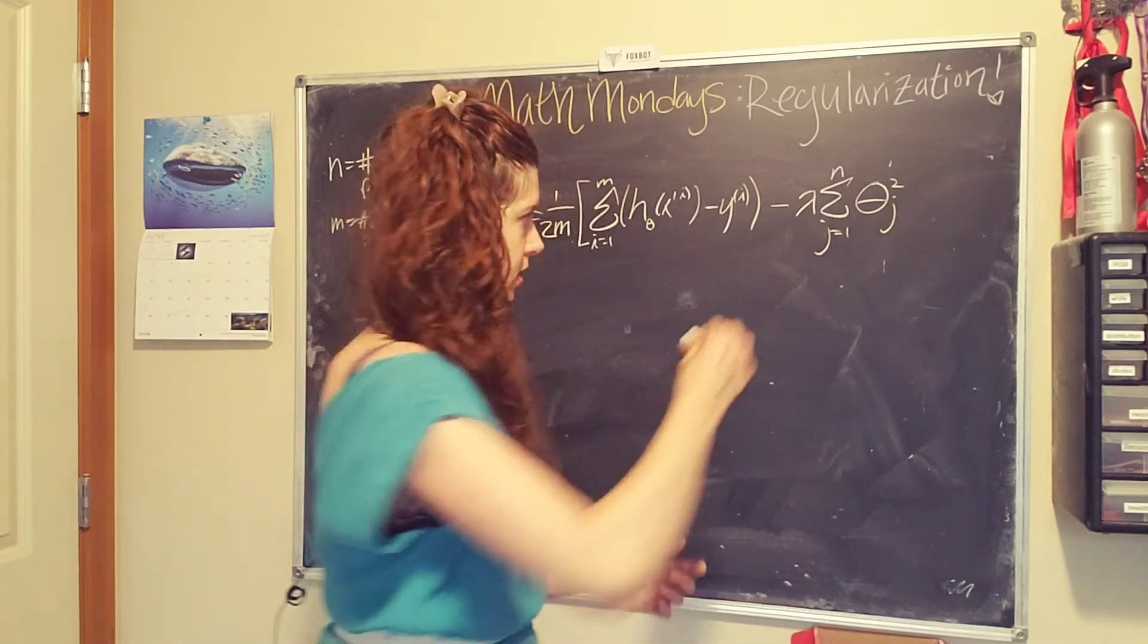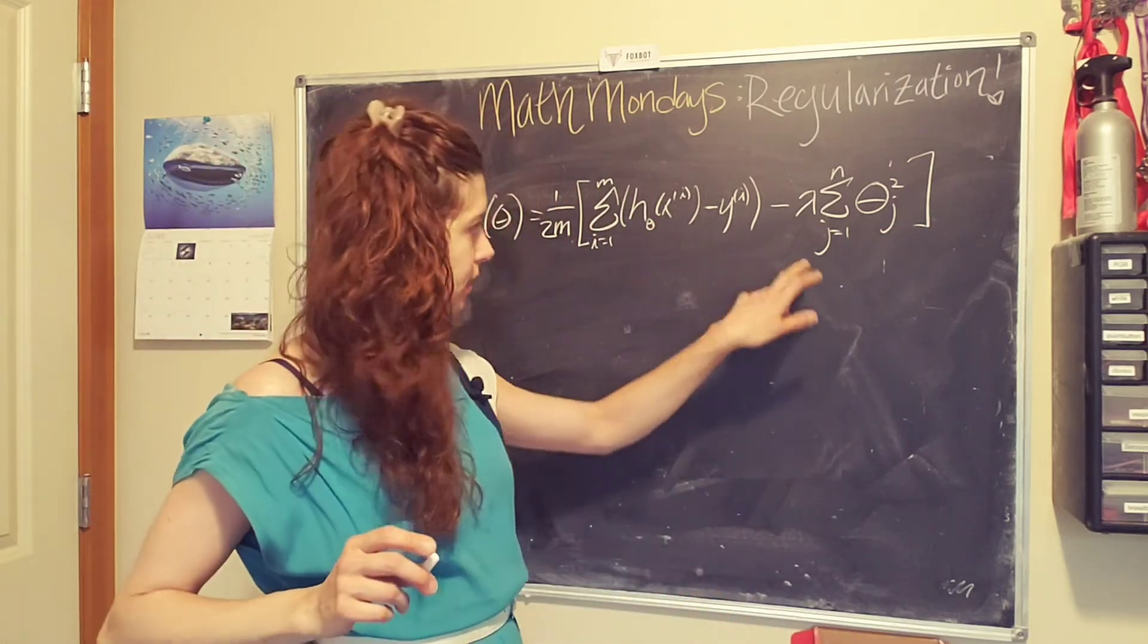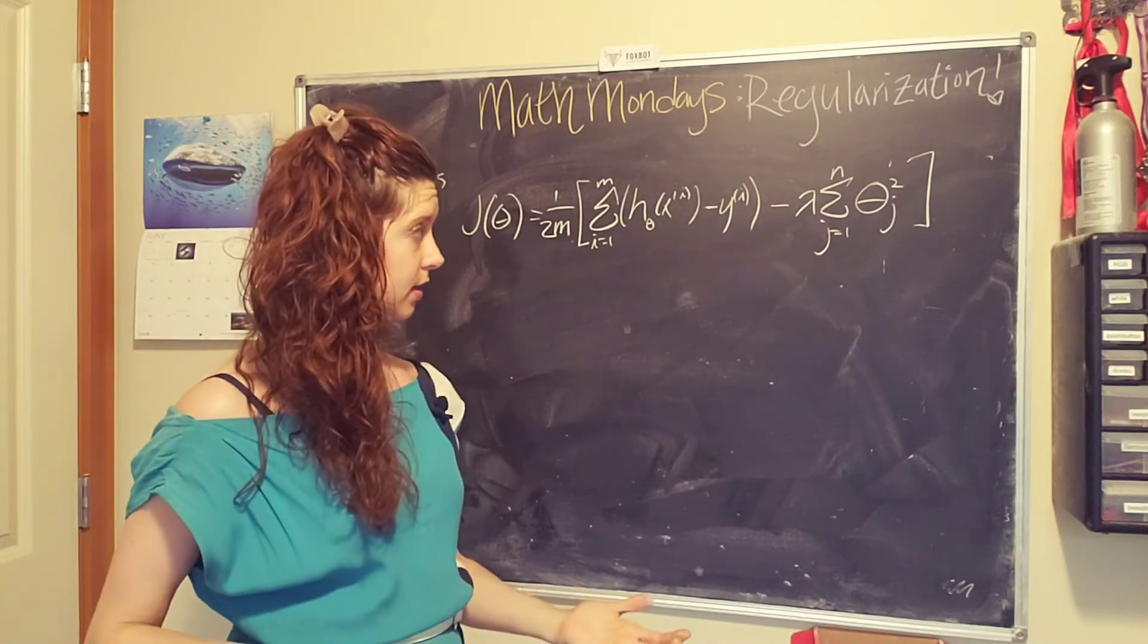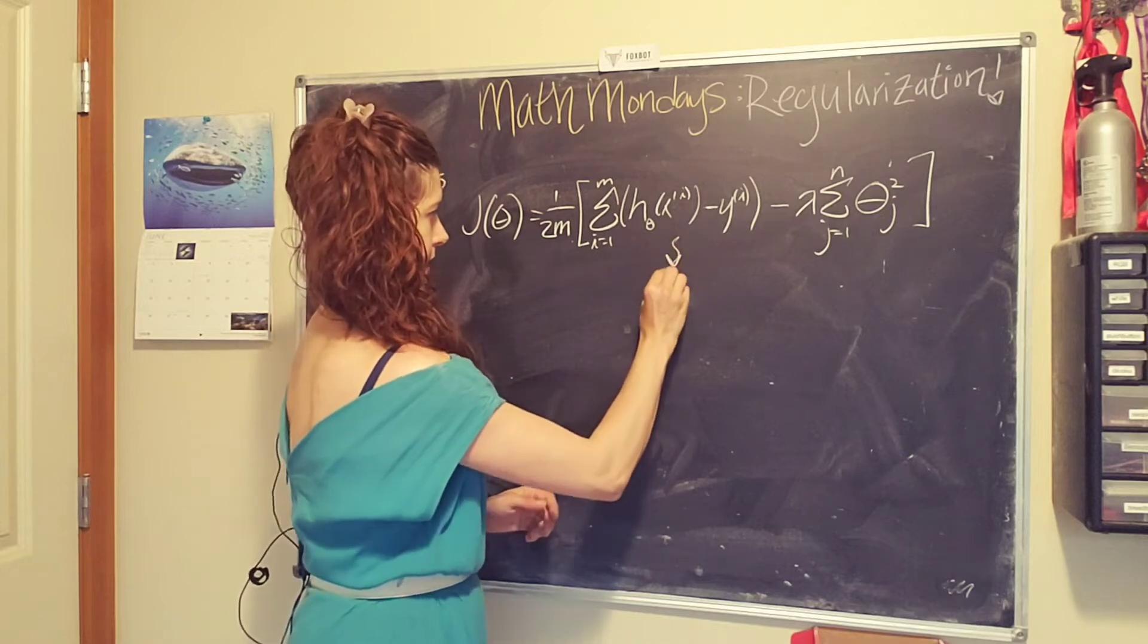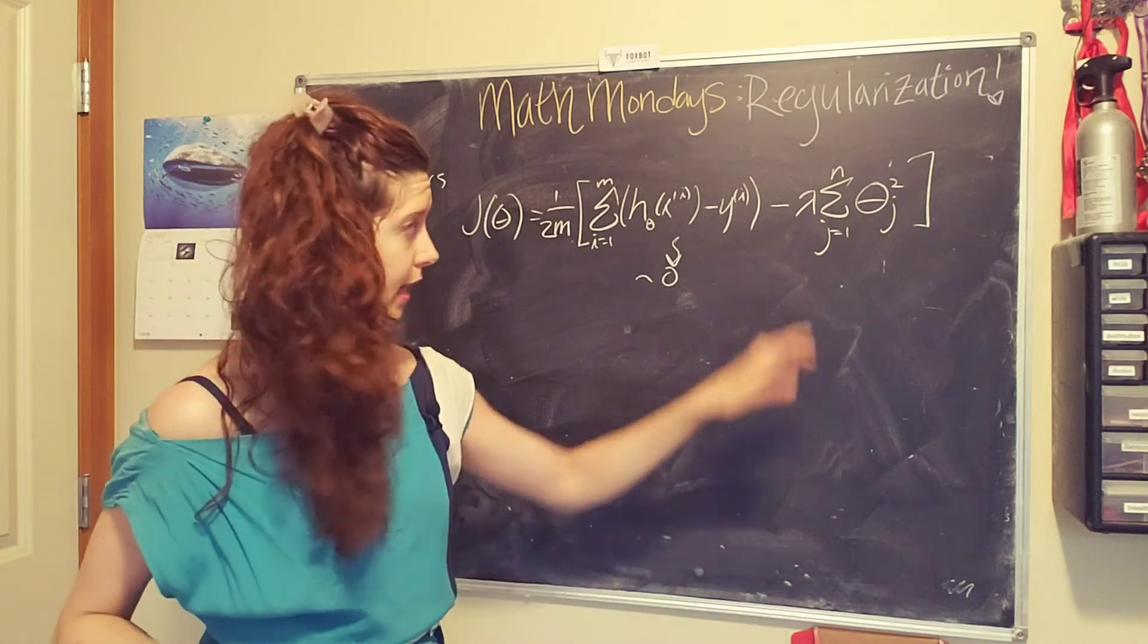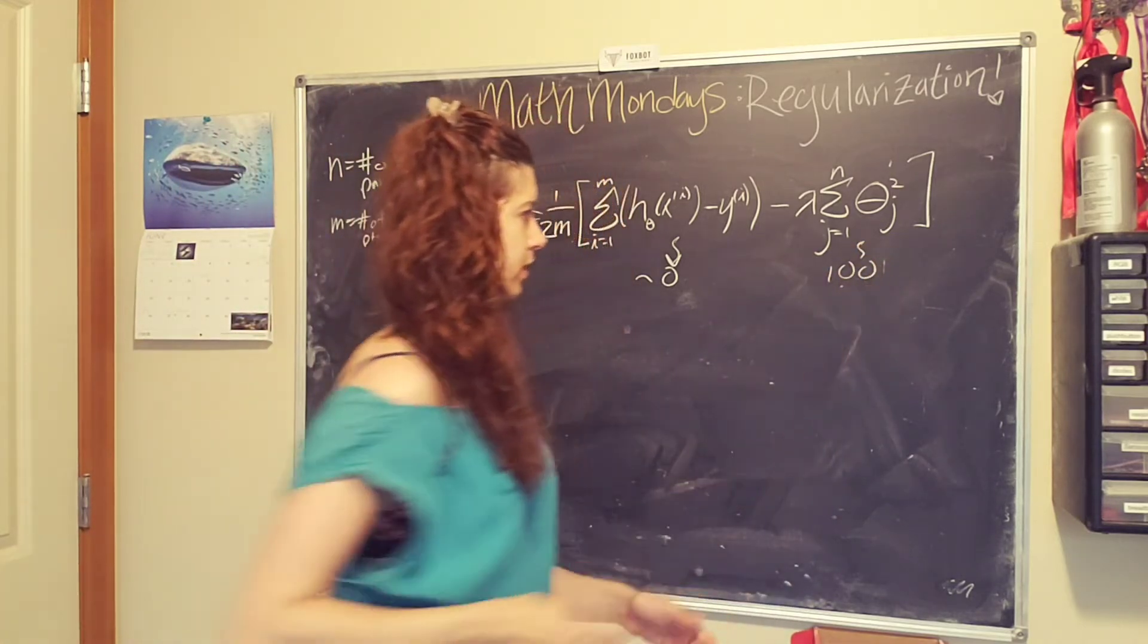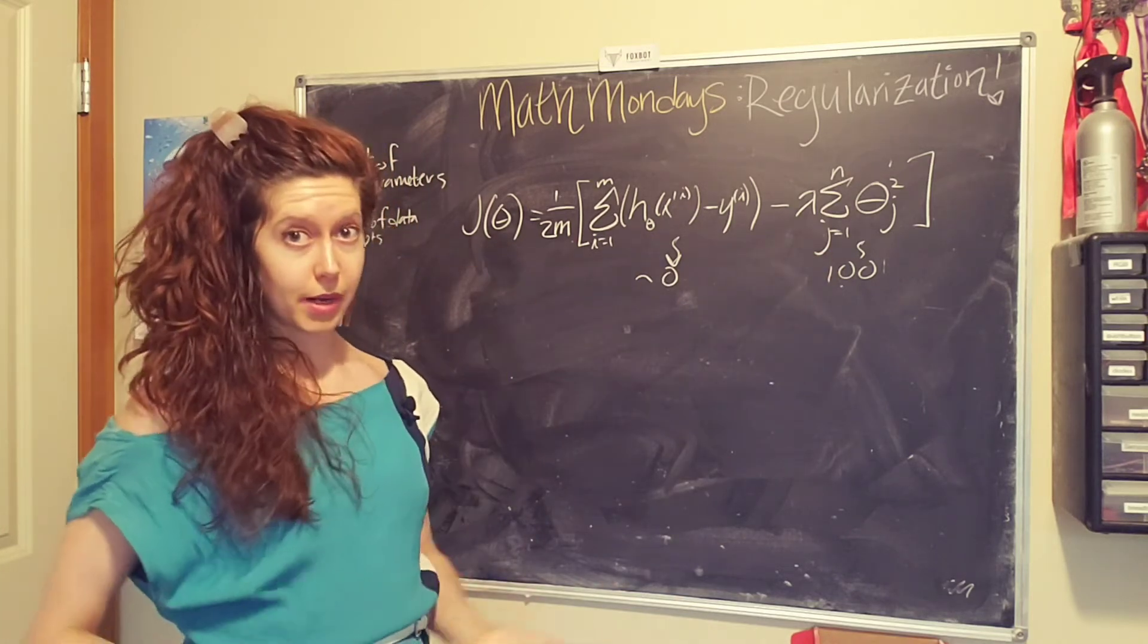And then we call it good. Okay cool, so what is this term doing? Well it's shrinking the parameters. Because let's say this gets to be close to zero, but one of our parameters is huge and this term is a thousand or something like that or a hundred.